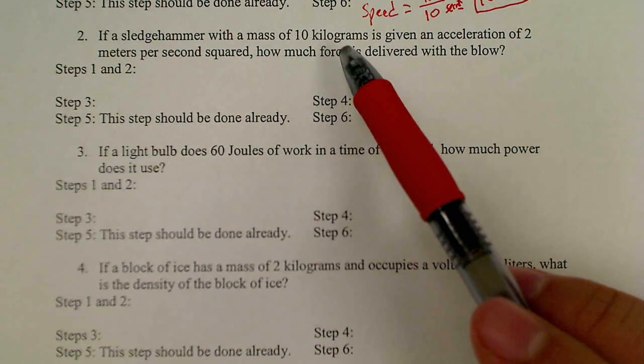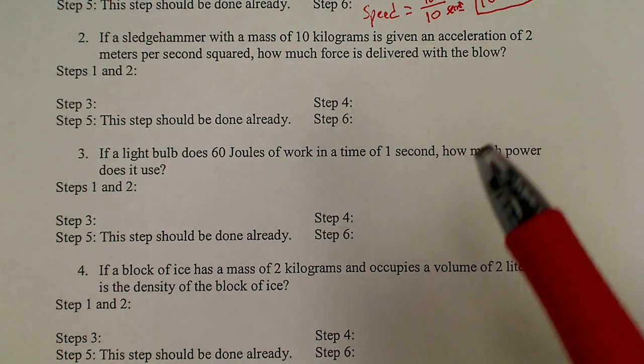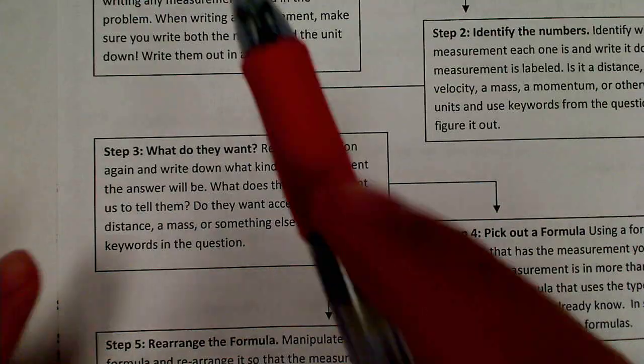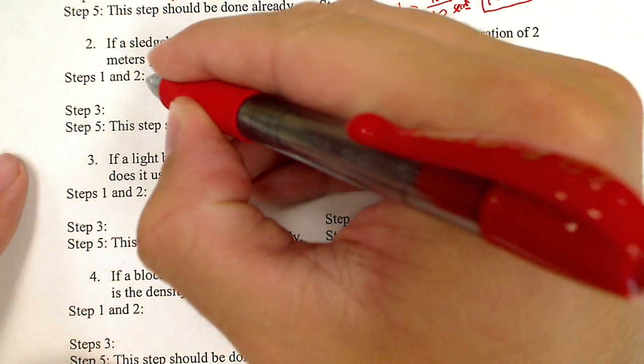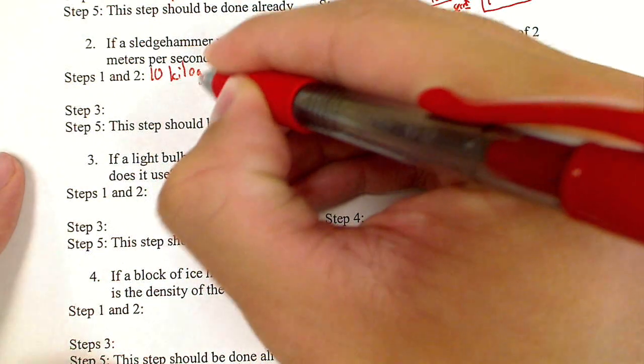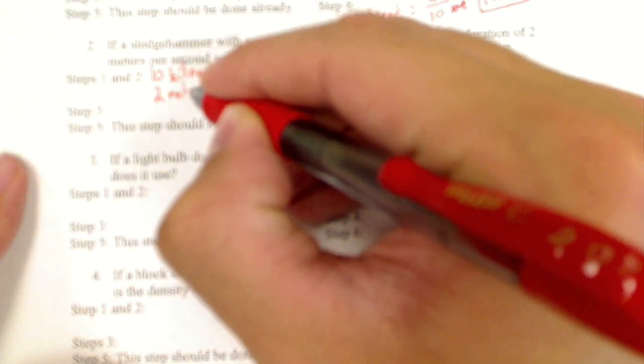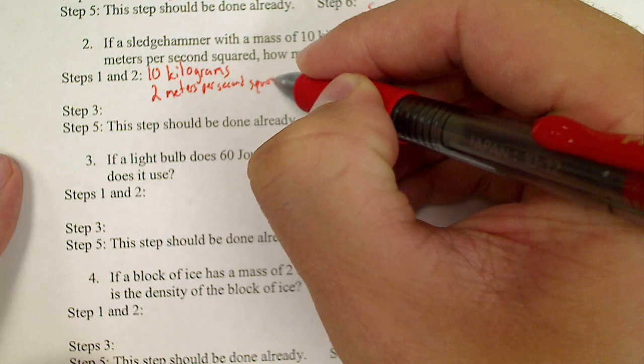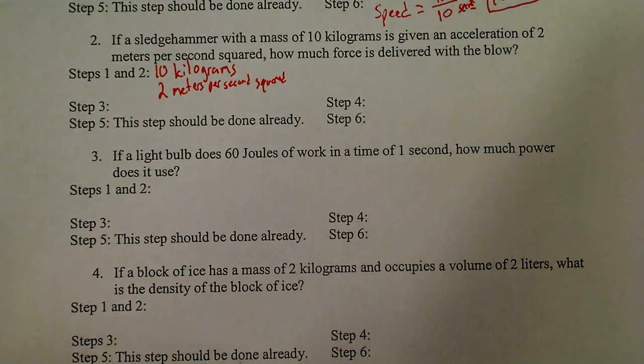If a sledgehammer with a mass of 10 kilograms is given an acceleration of 2 meters per second squared, how much force is delivered with the blow. Step 1 and 2. Step 1 is write down the numbers. A sledgehammer with a mass of 10 kilograms, an acceleration of 2 meters per second squared. There's step 1. I wrote down the numbers.